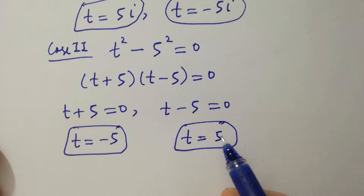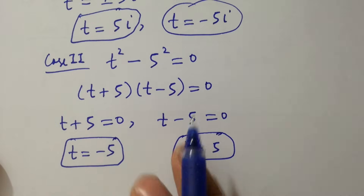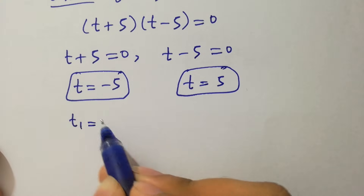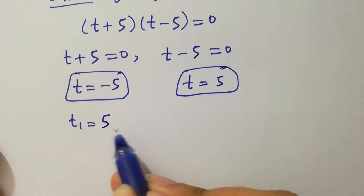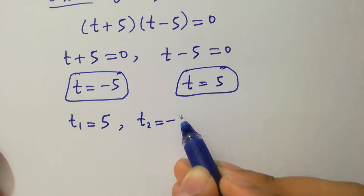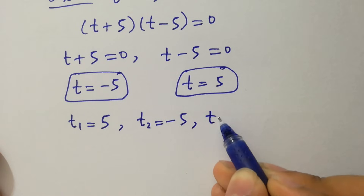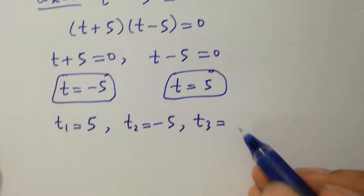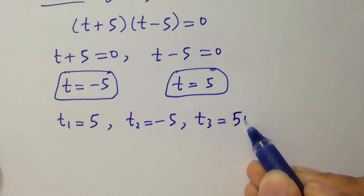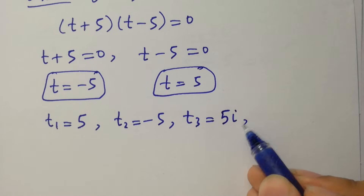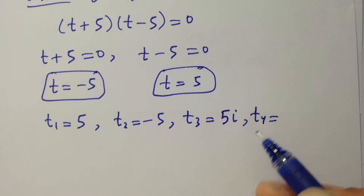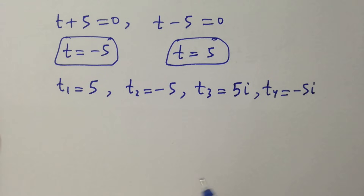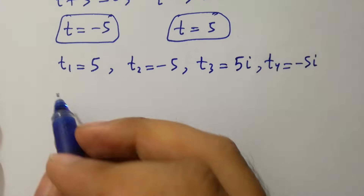So we have four values: t₁ equals 5i, t₂ equals −5i, t₃ equals 5, and t₄ equals −5. So we have four values of t.